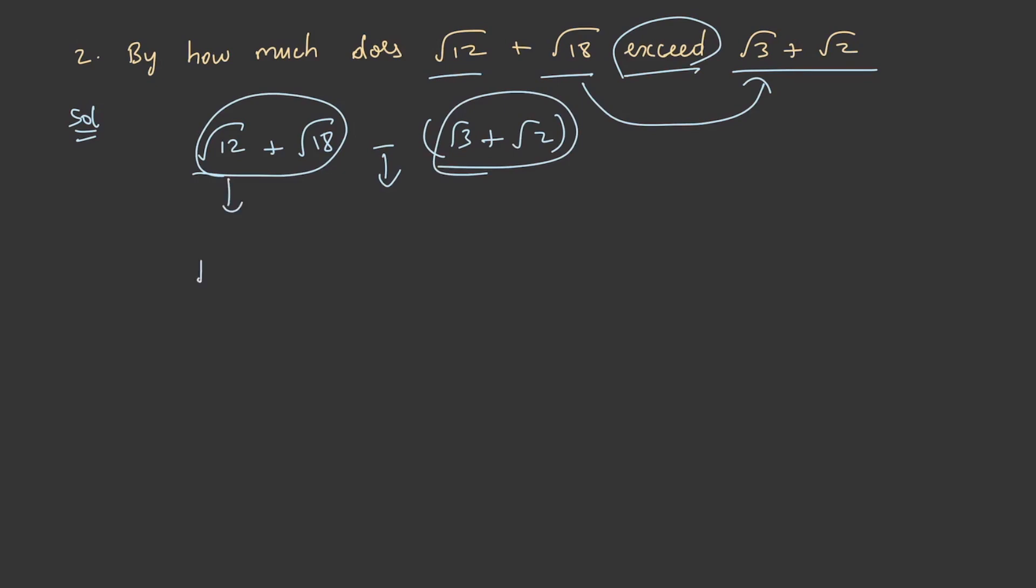√12 can be written as √(4×3) and √18 can be written as √(9×2). From this we are subtracting √3 + √2.